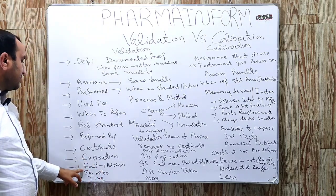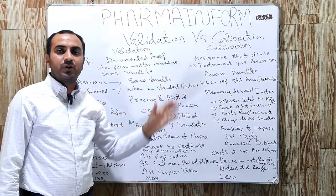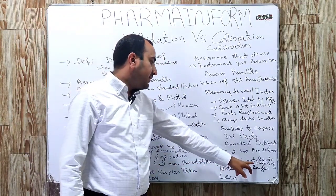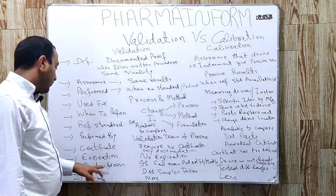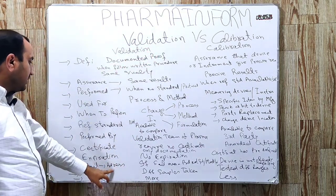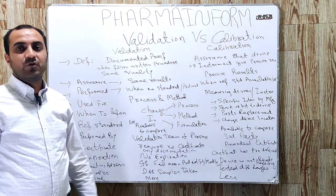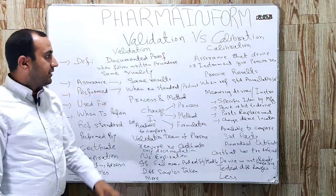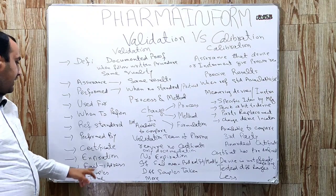Regarding failure: if validation fails, it means the product is not fit for use. If calibration fails, it means the device is not ready or okay to use. In case of validation failure, we make modifications and then perform validation again. In case of calibration failure, we perform repairing.